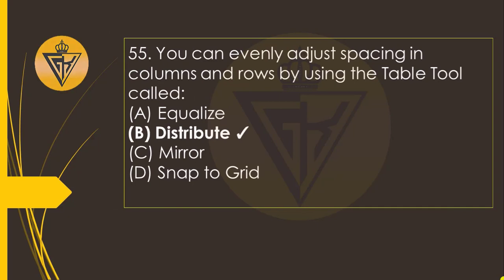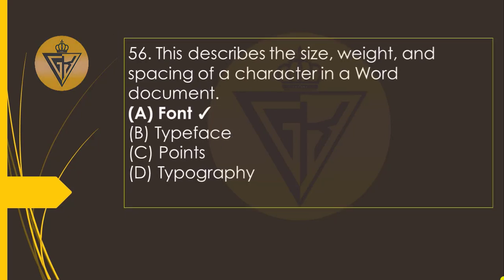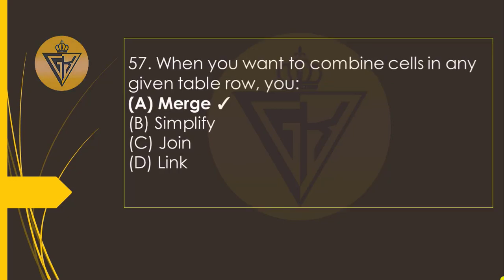You can only adjust spacing in columns and rows by using the table tool called the option B: Distribute. This describes the size, weight, and spacing of a character in a document — the option A: Font. When you want to combine cells in any given table row, you must first merge them.